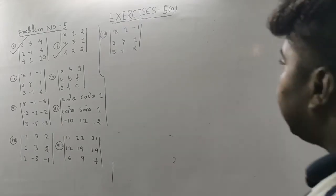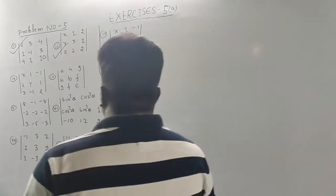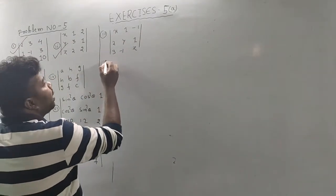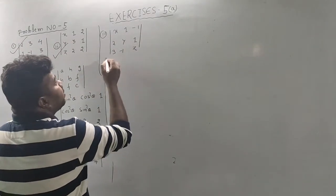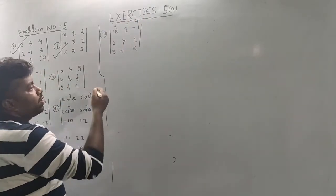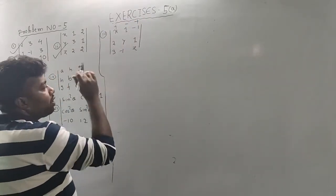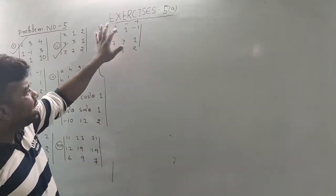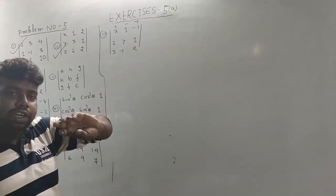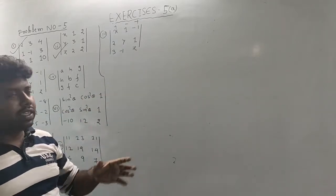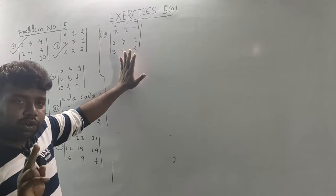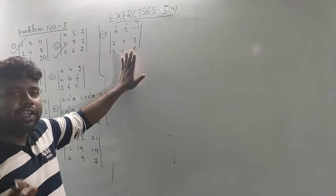Now we have to start and expand directly and normally. So plus, minus, plus. Then we have to expand. The property we have to try is theta 0. So theta 0 is very easy to expand. We have to expand normally.